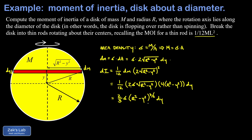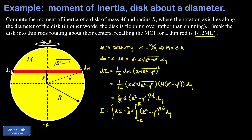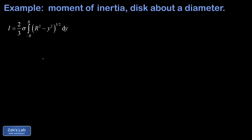Now that we have an expression for dI entirely in terms of y, we integrate to sum all contributions. The total moment of inertia is the integral of dI, keeping (2/3)σ out front: I = (2/3)σ ∫(R² − y²)^(3/2) dy. The limits of integration on y go from the bottom of the disk (y = −R) to the top (y = +R), so we integrate from −R to R. That completes the setup, but this integral requires a trig substitution.